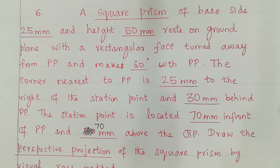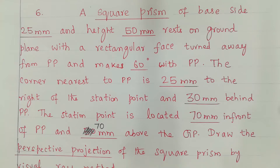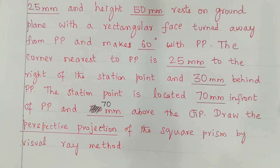Welcome. Perspective Projection. Please read the question. A square prism of base side 25mm and height 50mm rests on ground plane with a rectangular face turned away from PP and makes 60 degrees with PP. The corner nearest to PP is 25mm to the right of the station point and 30mm behind the PP. The station point is located 70mm in front of PP and 70mm above the GP. Draw the Perspective Projection of the square prism by visual ray method.